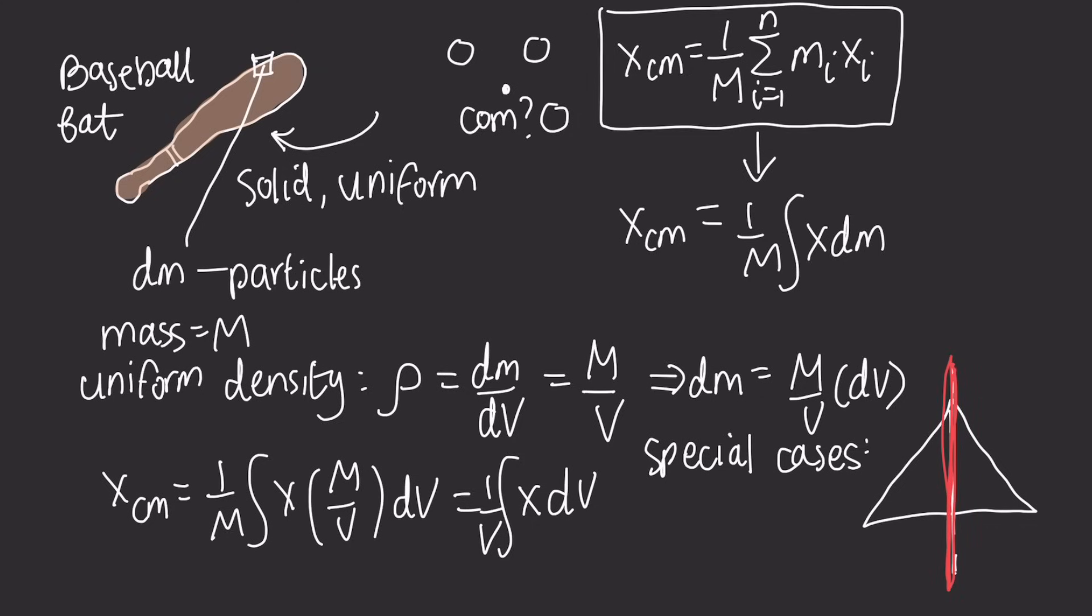If you have like a banana, there's going to be some plane that you can split the banana into and the center of mass will lie on that plane. So you can use symmetry as a shortcut to find the point, line, or plane that you'd expect your center of mass to be on.